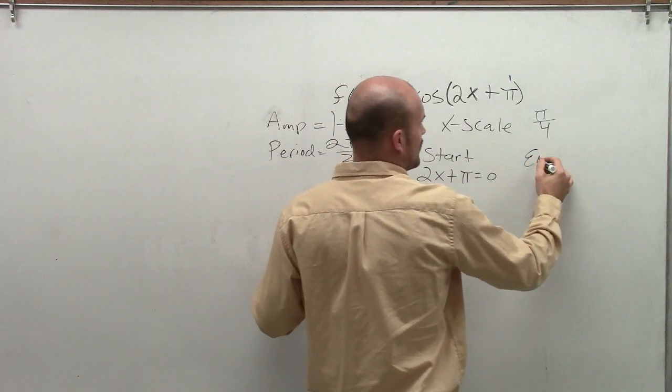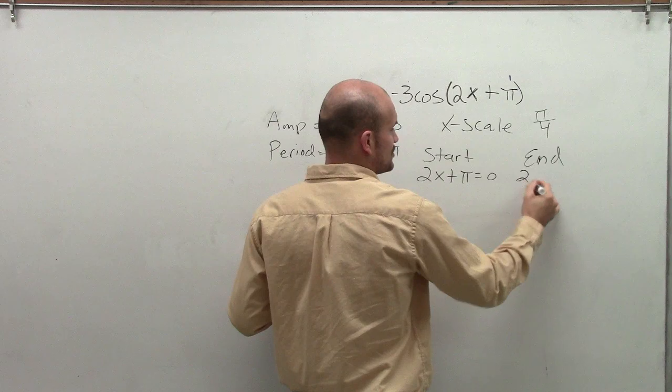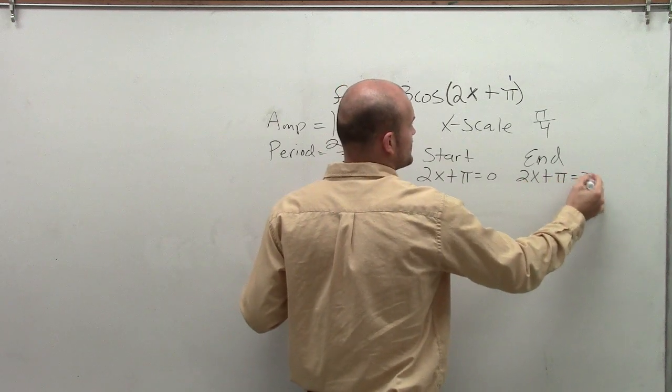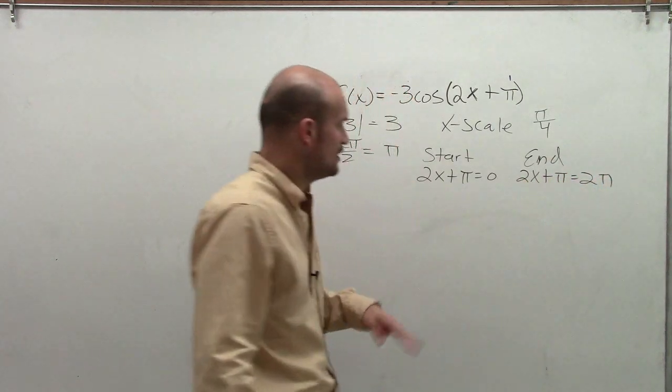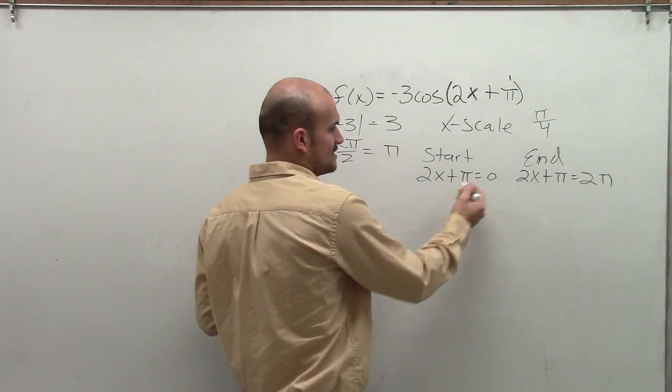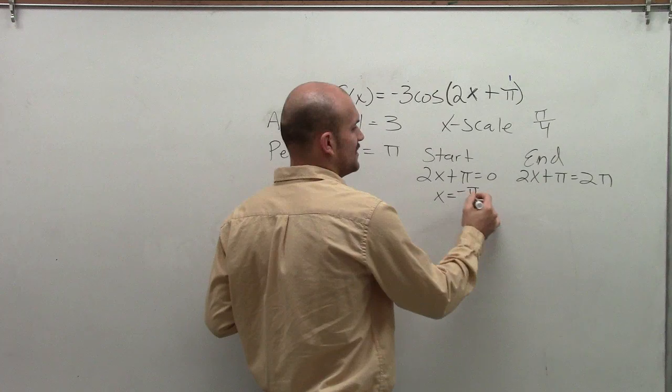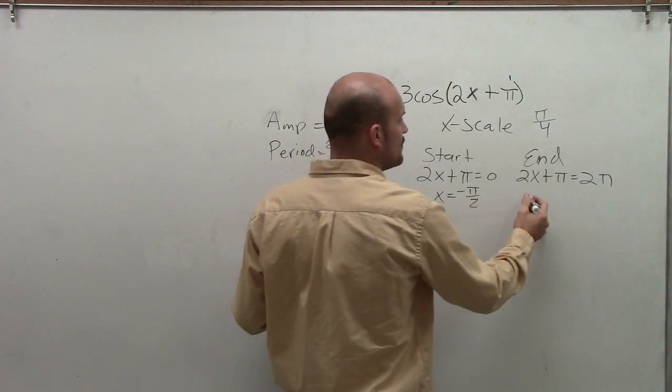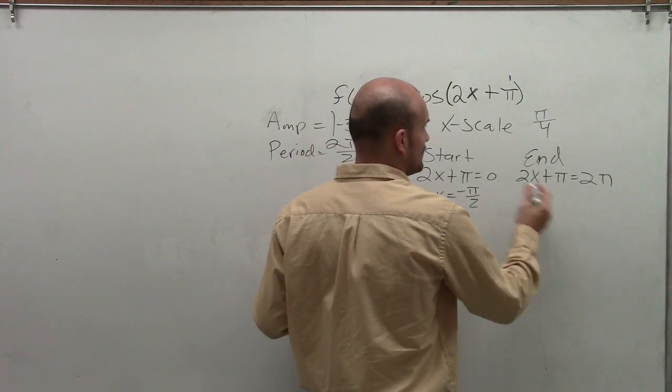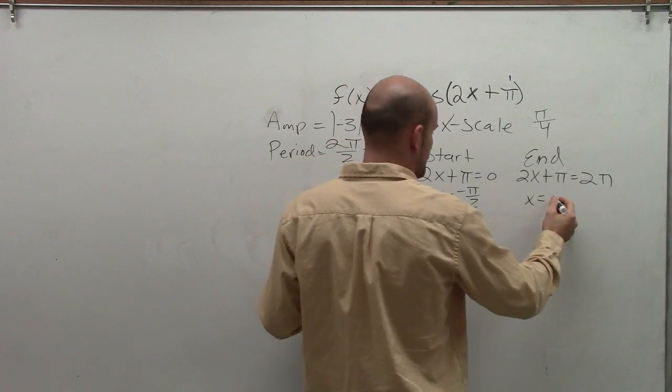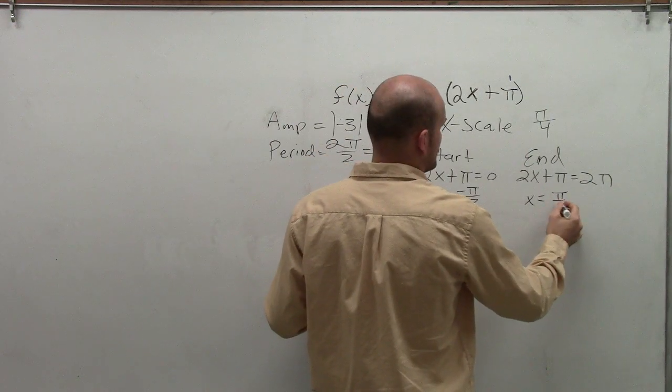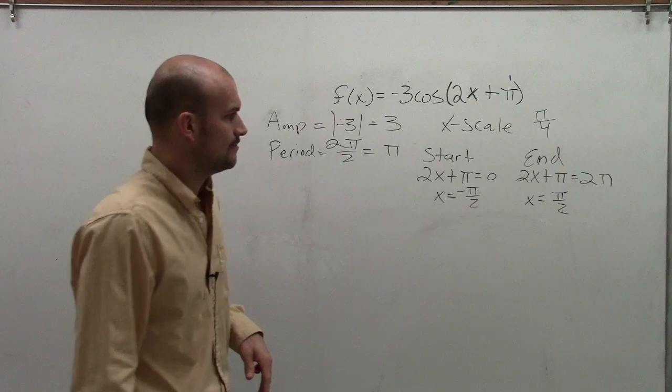Then the end of our initial period, we're going to take whatever's inside, which is 2x + π, and then we're going to set that equal to 2π. So therefore, by solving for x, subtracting π divided by 2, my new starting point is x = -π/2, and my new endpoint is x = π/2, positive π/2.